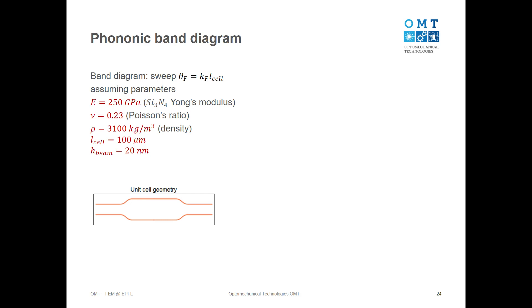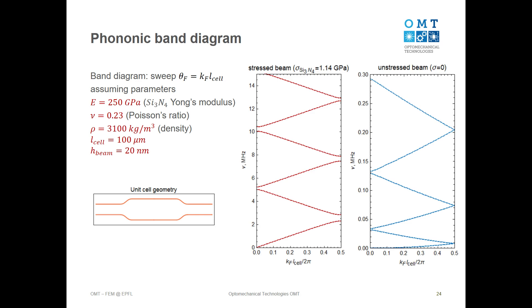Here is an example of how the band diagram looks for parameters corresponding to our silicon nitride strings including deposition stress. In COMSOL, calculations of vibrations of stressed structures required an additional step; here it's incorporated naturally in the equations. The time of computation for this band diagram is on the second scale, which is nice. You can see the difference between a band diagram for a stressed string — which is roughly linear — and for an unstressed one, which goes quadratically and has lower frequencies.